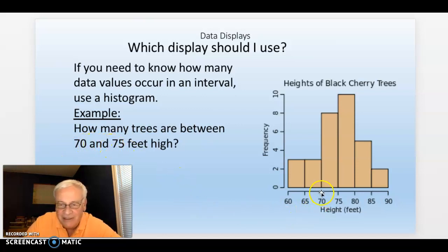Well, we can look at this and say, okay, well here's 70, here's 75. Come up here—there's eight of them. We don't know the exact value of those eight trees, but we know they're between 70 and 75.